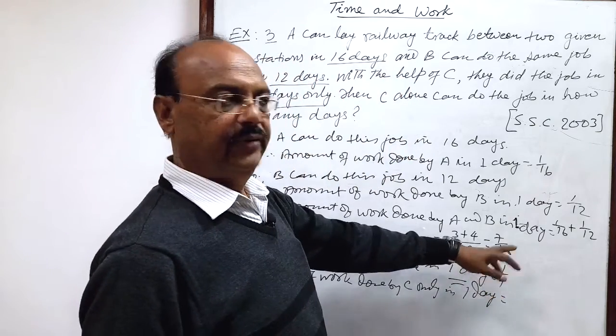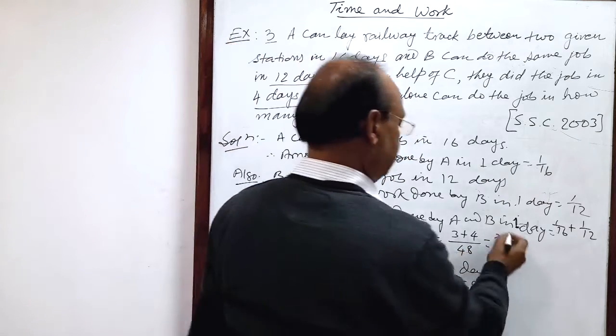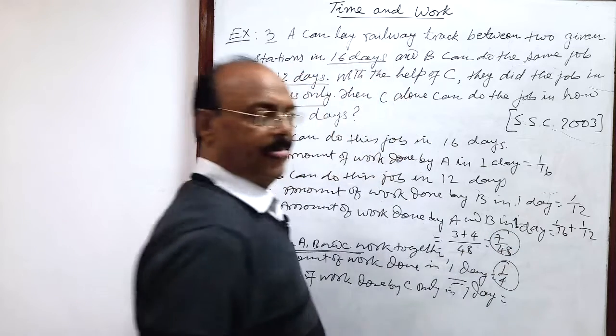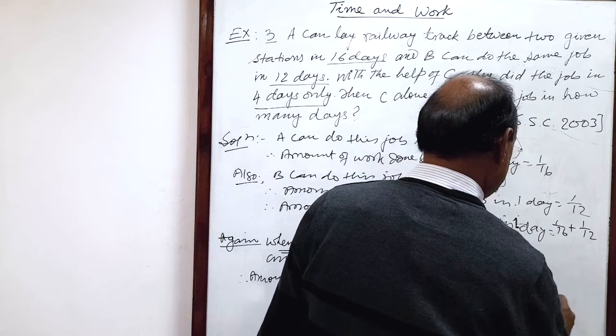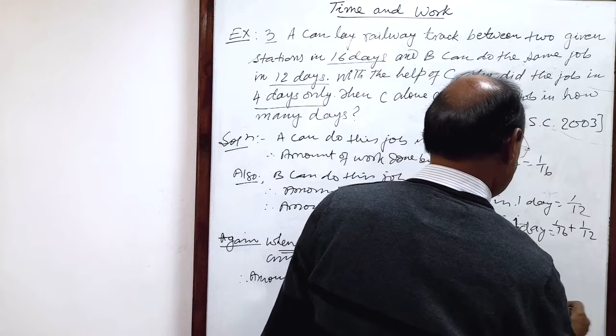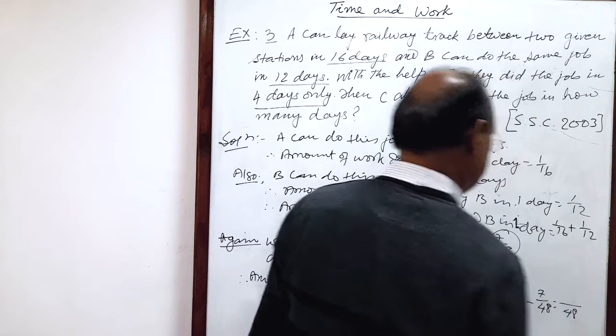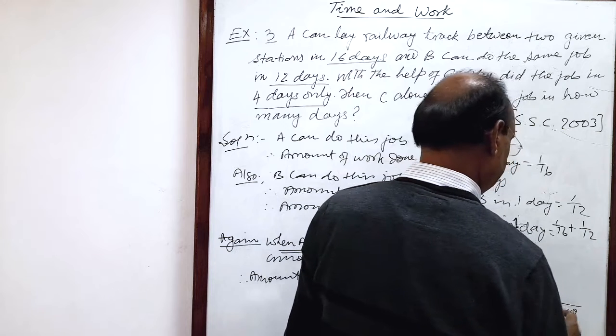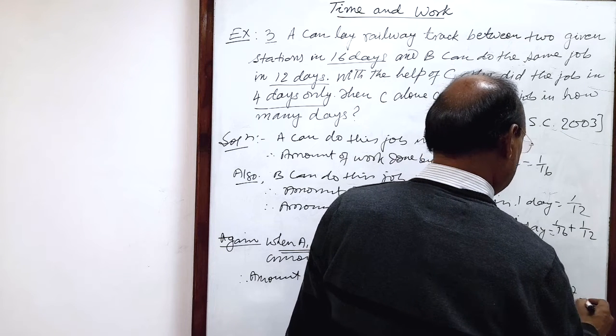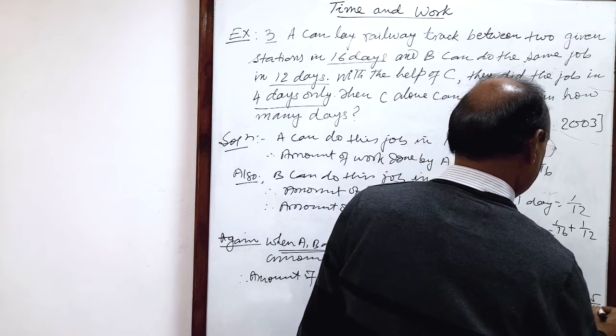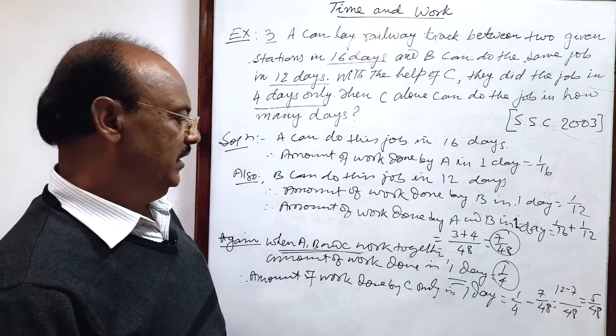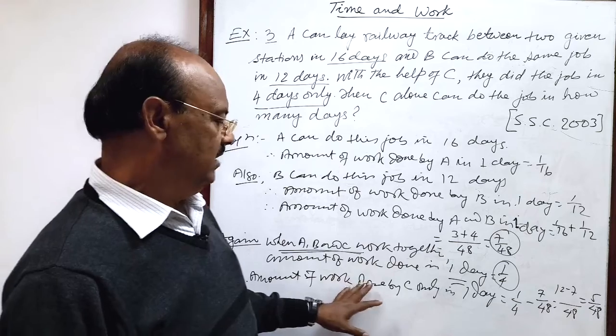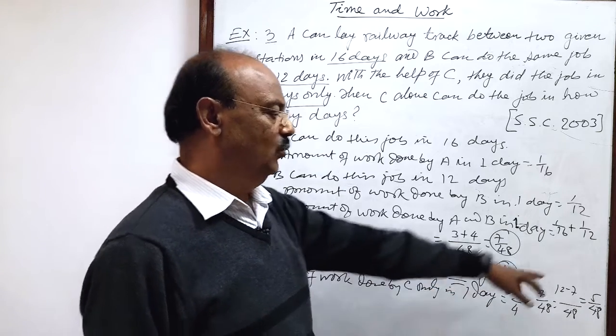Just we have to find the difference of these two numbers. So 1 by 4 minus 7 by 48. LCM will be 48 and here 12 minus 7, this is 5 by 48. Work has been done by C only in one day.